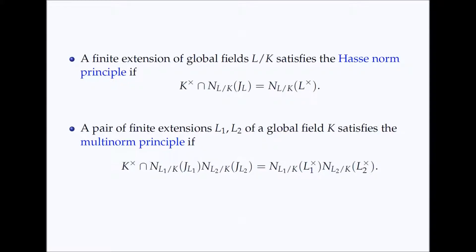Then by analogy, we say that a pair of finite extensions L1 and L2 of K satisfies the Multinorm Principle if every element of the multiplicative group of K that is a product of norms of ideles is actually the product of norms of elements from the fields L1 and L2.